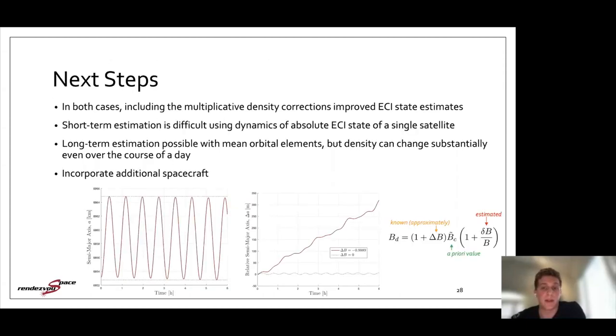And in terms of next steps, in both cases, the multiplicative density corrections improved the ECI state estimates as well. So I didn't show those here, but it tightened the bounds and reduced the error in the ECI states. So it also serves as an improvement to the orbit determination process. But short term estimation is difficult using the dynamics of the absolute state of a single satellite. So when I didn't include the five-pack sensor, it was particularly problematic and it required a lot of tuning to get it to work well. And as the next steps, long term estimation would be possible with mean orbital elements. So over a long period of time, the mean semi-major axis will decay substantially. But at the same time, density can change substantially even over the course of the day. So we could get corrections to the atmospheric density over a long period of time. But the true correction at a single instant in time might be different than just a correction we derive for the density over time.